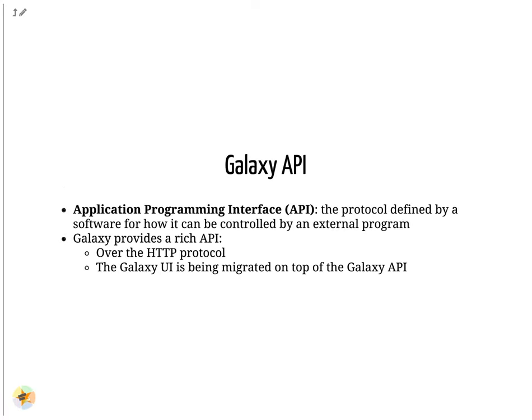An application programming interface provides software developers with a definition of the methods to interact with a program or a library. When the program is a remote web server like Galaxy, the methods are represented by URLs and the communication is through the HTTP protocol. Nowadays, most of the Galaxy user interface makes use of the backend API to implement an asynchronous web application.